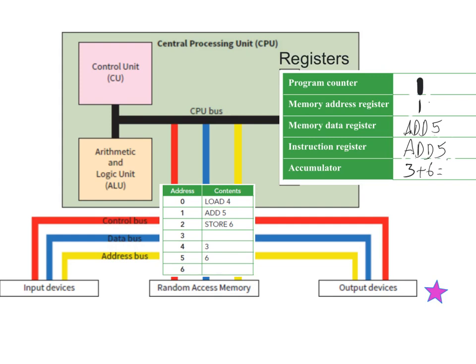We can now work out the total, which is nine. The last stage in our program is to store the result in memory location six of RAM. We take our number nine and transfer it into RAM at position six. That completes our fetch-decode-execute cycle for a simple addition of two numbers. This happens in a tiny fraction of a millisecond, but that's essentially what happens inside your CPU when it's doing one calculation.